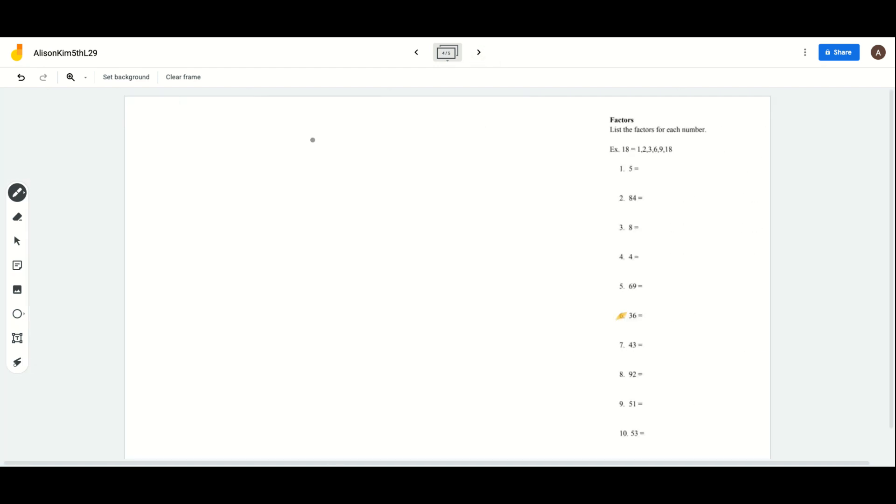Now we're going to do factors. We're going to go with number 6. Factors is basically which numbers multiply together equals or which numbers goes into the number given. In our case, it's going to be 36. We already know that all numbers have the factors of 1 and the number itself, so it's going to already have 1 and 36.